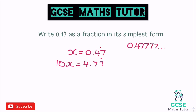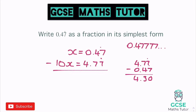Now we can take these away from each other, and those recurring 7s are going to cancel out. So 4.77 take away 0.47: the 7 take away the 7 makes 0, the 7 take away the 4 makes 3, and 4 take away 0 is 4, so it's 4.3. So 10x take away 1x leaves us with 9x, and our decimals give us 4.3.